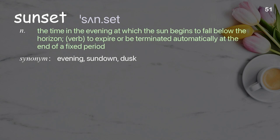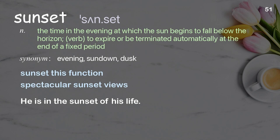Sunset: The time in the evening at which the sun begins to fall below the horizon. Verb: to expire or be terminated automatically at the end of a fixed period. Examples: Sunset dysfunction, Spectacular sunset views. He is in the sunset of his life.